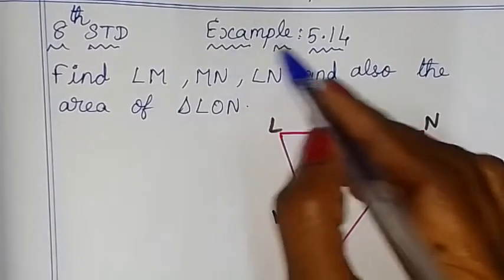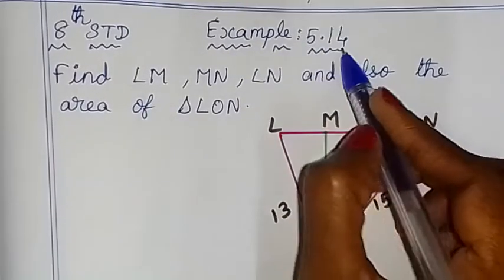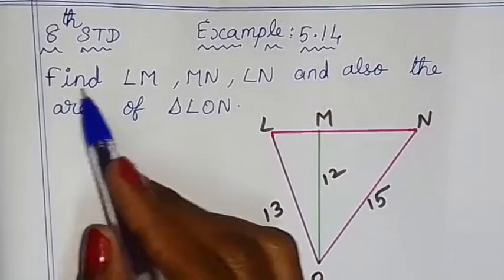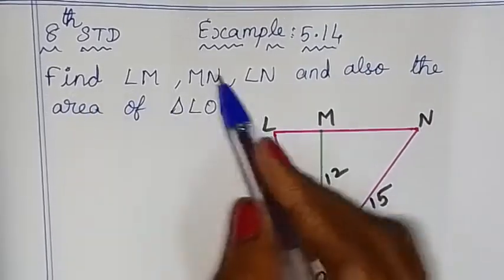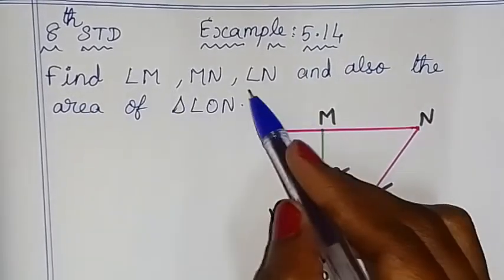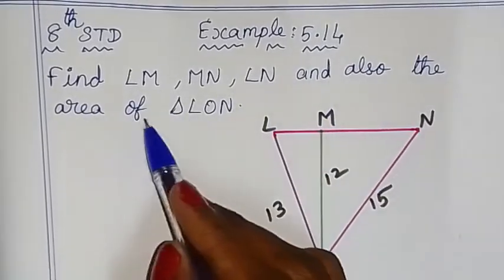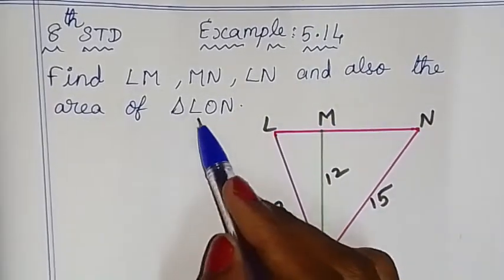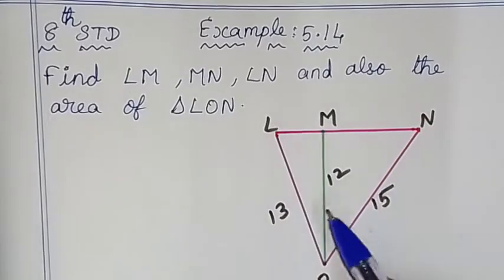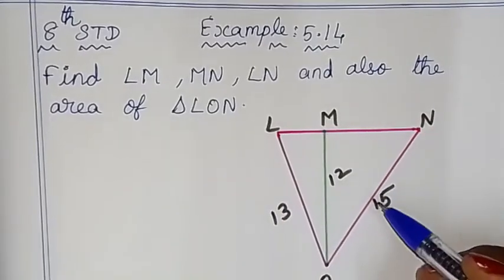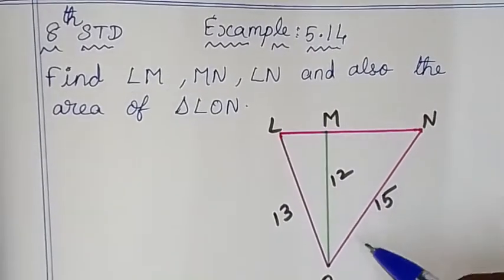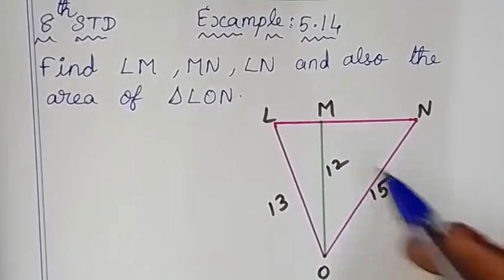Hello children, I will show you example 5.14. Find LM, MN, LN, and also the area of triangle LON. So now we have a picture here.